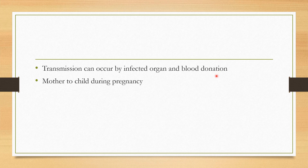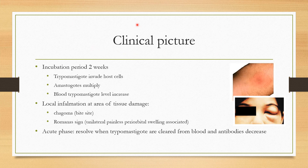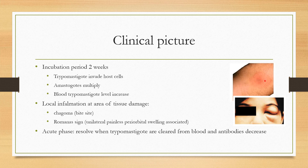The clinical picture of Chagas disease: the incubation period is two weeks. During this time, trypomastigotes invade cells. There is local inflammation at the bite site. If the kissing bug deposits feces near the eye, it causes painless periorbital swelling called Romaña's sign. A skin nodule at the bite site is called a chagoma.